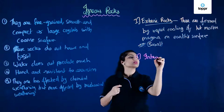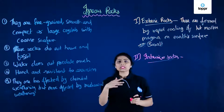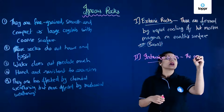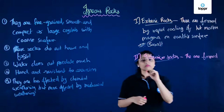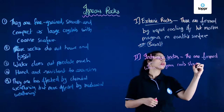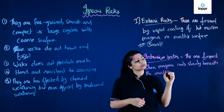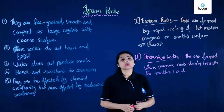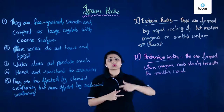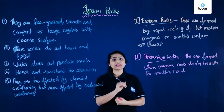Intrusive rocks are the opposite of extrusive. They are formed when magma cools slowly beneath the earth's crust. These are called intrusive rocks. You will find many types of intrusive rocks — they are called batholiths, laccoliths, and various other types. Let's go ahead and learn them in detail.